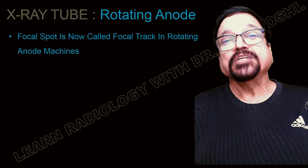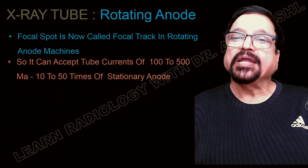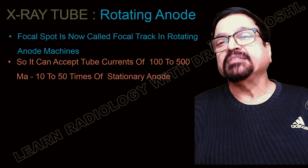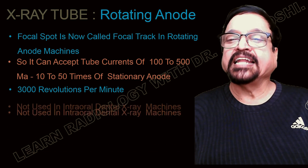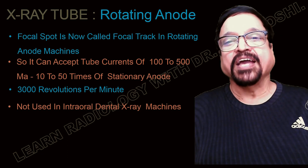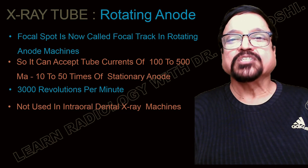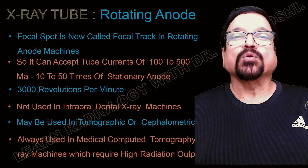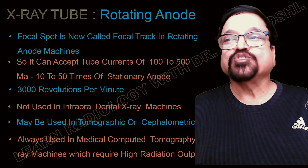Because the anode is moving, every time a different surface is exposed, and the focal spot is therefore called a focal track in a rotating anode machine. It can accept a tube current of 100 to 500 mA — 10 to 50 times that of a stationary anode — due to higher capacity at 3000 to 3600 revolutions per minute. It cannot be used for dental purposes because of its large size. It is used where more successive or longer exposures are needed, such as in departmental radiography, CT scan, mammography, and angiography.